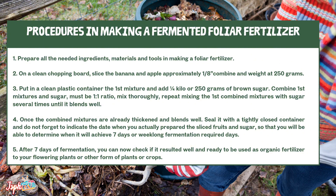Procedures in making a fermented foliar fertilizer: first, prepare all the needed ingredients, materials, and tools. On a clean chopping board, slice the banana and apple into approximately 1/8-inch pieces, combine and weigh at 250 grams. Put the first mixture into a clean plastic container and add 250 grams of brown sugar — the mixture and sugar must be in a 1 to 1 ratio.